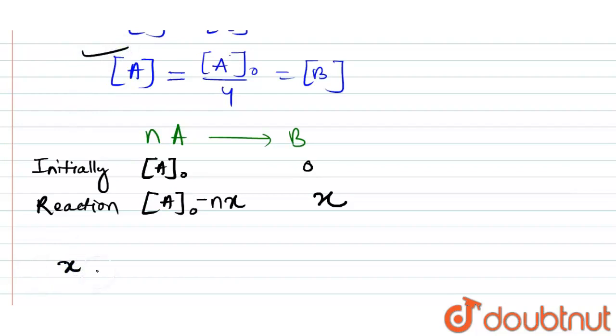And we have written here that concentration will be one-fourth. That means A naught minus n times x, in the place of x we will put A naught by 4, so here we will get n times A naught by 4 equals A naught by 4.